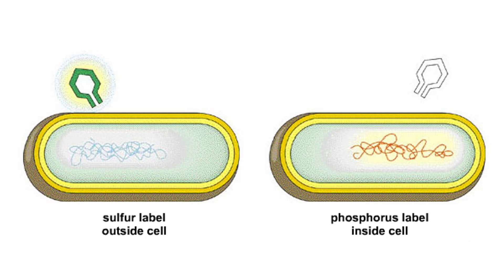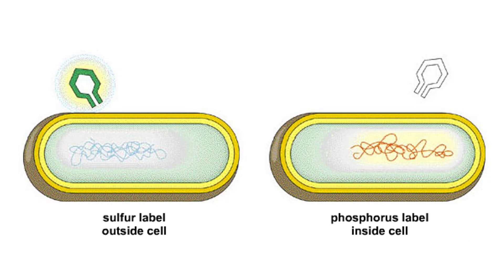In contrast, bacterial cells infected by a phosphorus-labeled virus did contain radioactive DNA. This was strong evidence that DNA, not protein, is injected during infection and is the genetic material of this type of virus.